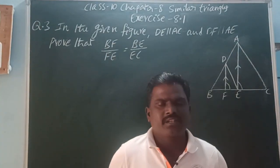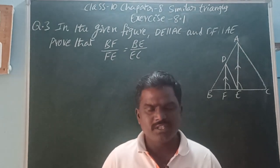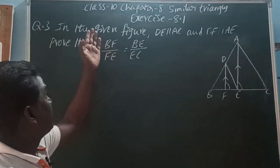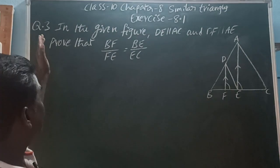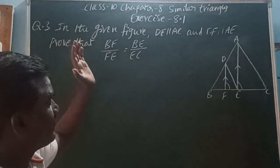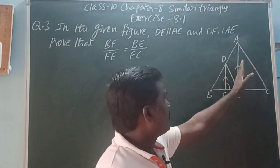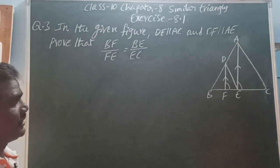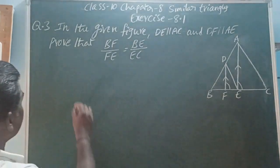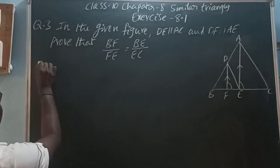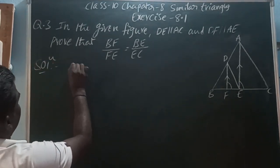Hi, hello, welcome back to our YouTube channel. This is Balakrishna. In this video, I am going to explain Class 10th Chapter 8 Similar Triangles, Exercise 8.1, Question Number 3. In the given figure, DE is parallel to AC and DF is parallel to AE. Then prove that BF/FE is equal to BE/EC.